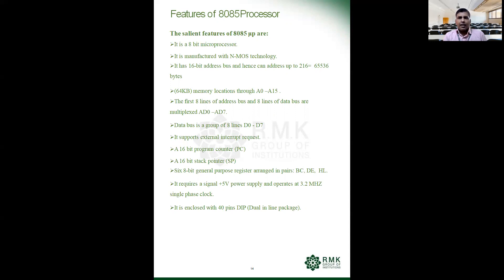Initially, AD0–AD7 will act like an address bus. Later, it will be used as a data bus. The data bus is a group of eight lines from D0 to D7. It supports external interrupt requests as well. It has a 16-bit program counter, which is a register that stores the address of the next instruction to be executed. It also contains a 16-bit stack pointer, which is useful for all kinds of stack operations.